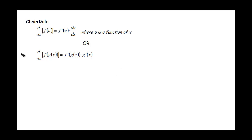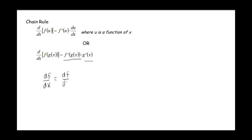Just a reminder: this is what our chain rule is. It basically tells us that when we have a function that has multiple layers, or is the composition of functions, we take the derivative of the outside function and then multiply it by the derivative of the inside function. Another way we often see this written is df/dx equals df/du times du/dx — just another way the chain rule is written.